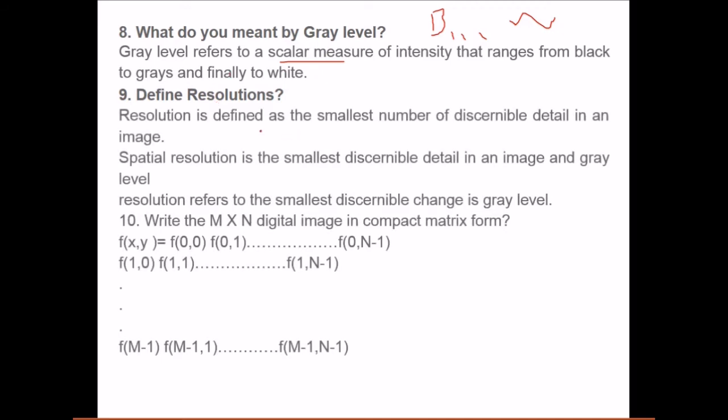Define resolution. Resolution is a special case which we generally come across but there is more to it. What is resolution? It is defined as the smallest number of discernible detail in an image. So in image up to what level you can go means the smallest discernible or findable detail is what we call as resolution. Spatial resolution is the amount of discernible detail in an image. Spatial resolution is in meters normally. So the distance measure in meter which is smallest discernible in the image is spatial resolution.